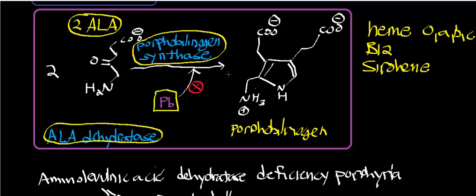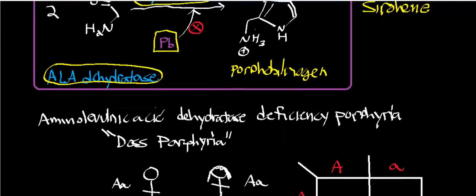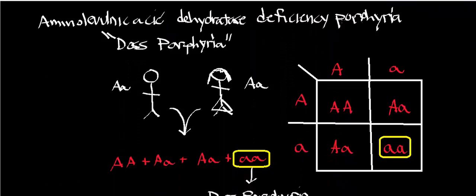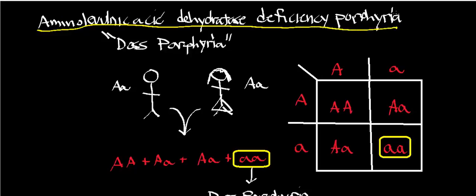A deficiency of this enzyme is called aminolevulinic acid dehydratase deficiency porphyria. This is one of the porphyrias, which are basically deficiencies of any of the enzymes involved in heme biosynthesis. The more common name for this condition is doss porphyria.